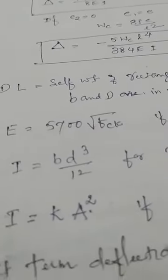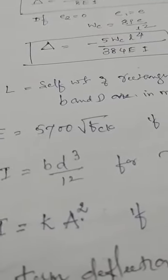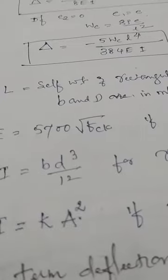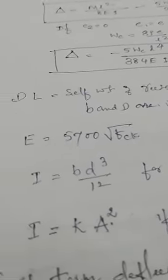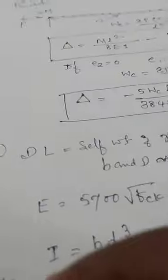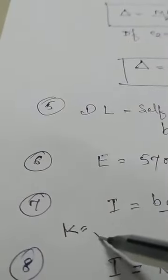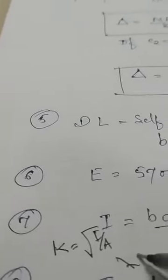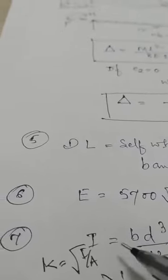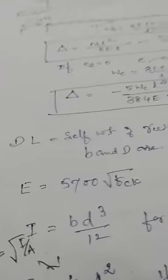Sometimes section dimensions b and d are not given. In that case, cross-sectional area and radius of gyration are given. The formula for radius of gyration is k = √(I/A). Simplifying this, I becomes k²·A.